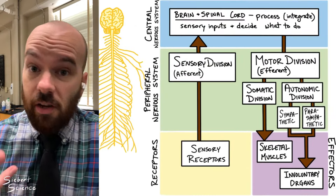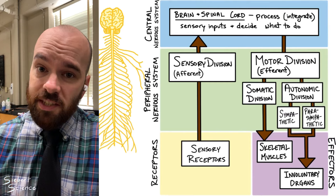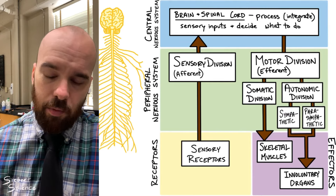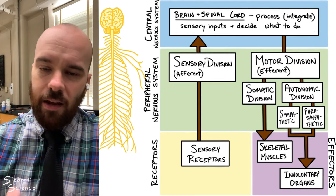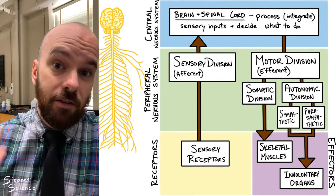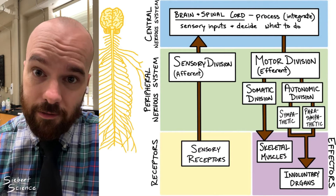So these were the divisions of the nervous system. It's one system that's all interconnected, and whenever we break it down into these different parts, it helps us to understand what's going on a little bit better.